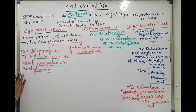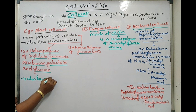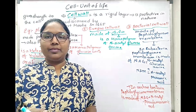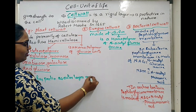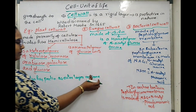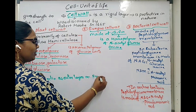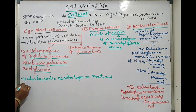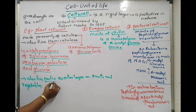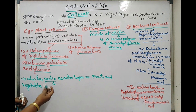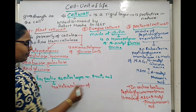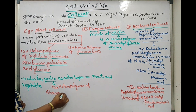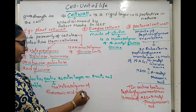Hemicellulose and cellulose are both present in plants. Plants also have pectin in some types of fruits and vegetables, like tomato, where it forms the outermost layer. Pectin is a heteropolymer of glucuronic acid and galacturonic acid.